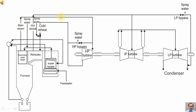Hot reheat goes to the inlet of the intermediate pressure turbine, where it is expanded to give mechanical output. The outlet of the intermediate pressure turbine goes to the low pressure turbine, where it is again expanded. The exhaust of the low pressure turbine goes to the condenser to condense the steam back to water, completing the steam-water cycle.